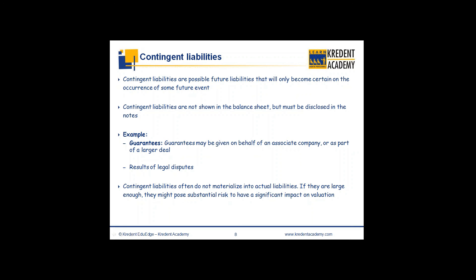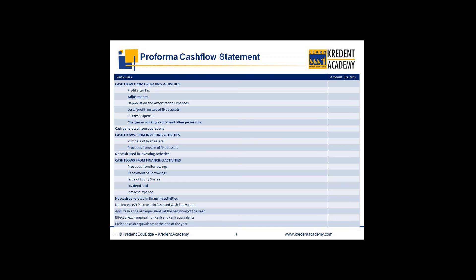An example would be legal disputes. In almost all balance sheets there are legal or tax liabilities — whether income tax or sales tax. Suppose the tax authorities have demanded payment and you feel you are not required to pay, so you have contested it in a legal court. The liability of paying the income tax would then be contingent on the court order — if the order is in your favor, you don't pay; if against you, you do. Similarly, if you have given a guarantee for some company or person, you are not liable to pay as long as they fulfill their obligation. Only in the event of a default are you liable to pay. Contingent liabilities often do not materialize into actual liabilities, but may pose a substantial risk to the future of the company.